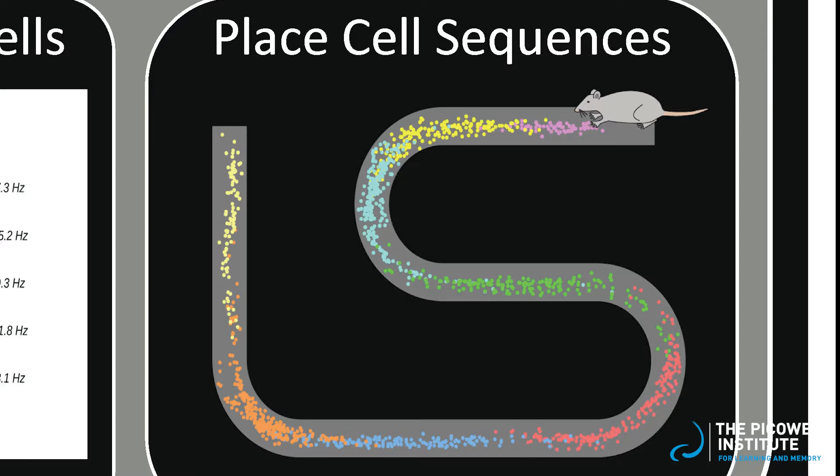As the rat runs down the track, the place cells will tend to fire in sequence, with the purple place cell firing at the beginning of the track, followed by the yellow place cell, and so on.